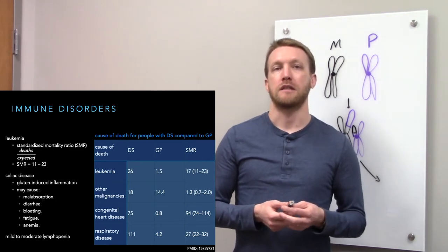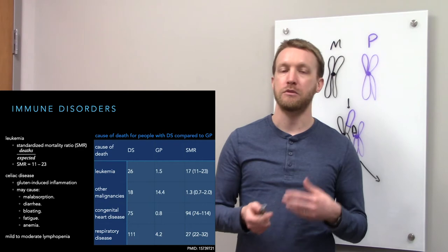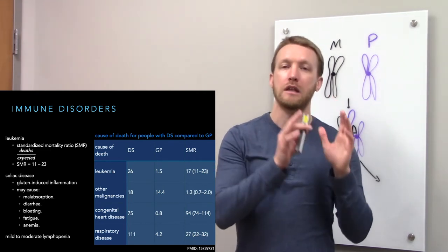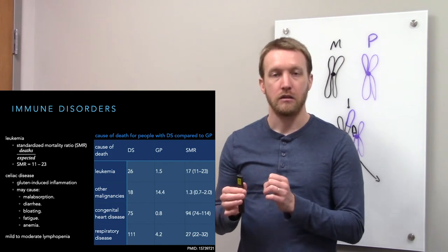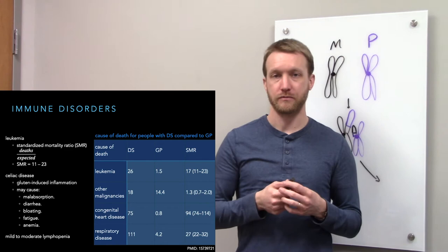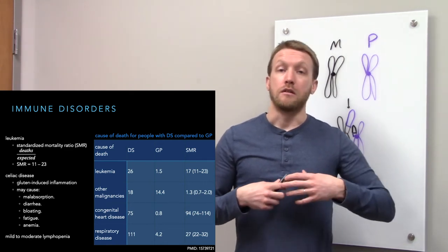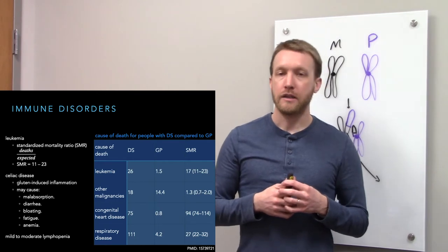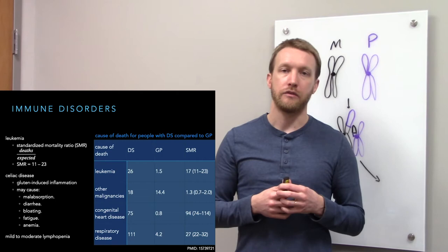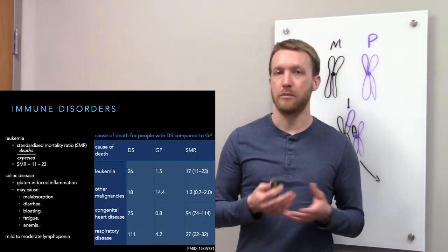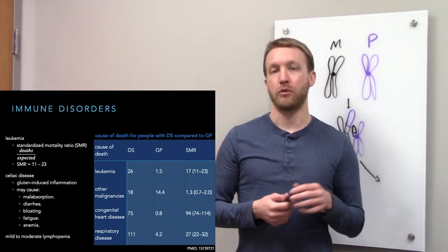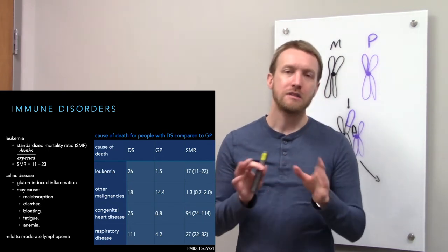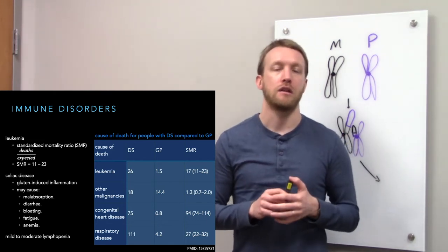Leukemia has a standardized mortality ratio of about 17 ranging between 11 to 23. So somewhere between 11 to 23 times more likely to cause death in Down syndrome compared to the general population. We see cancer of the immune system. Other cancers don't seem to be at an elevated risk. If we look at the standardized mortality ratio for any other type of malignancy, we get 1.3. The 95% confidence interval is somewhere between 0.7 and 2. Notice that includes 1. So it's not a statistically significant increase in mortality risk.